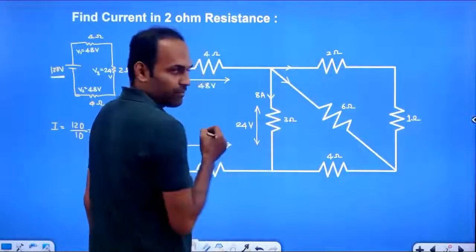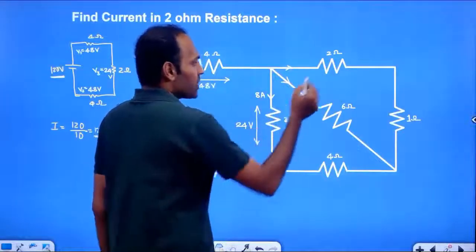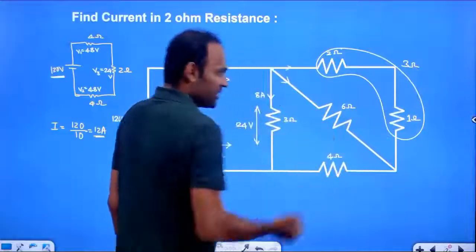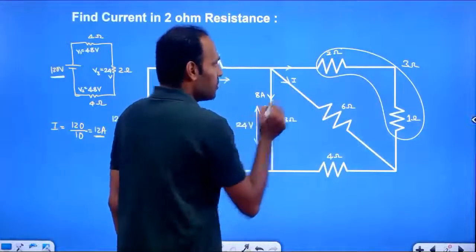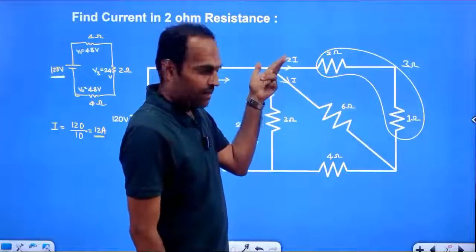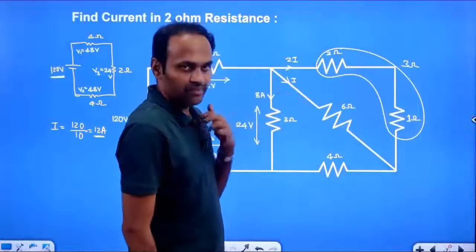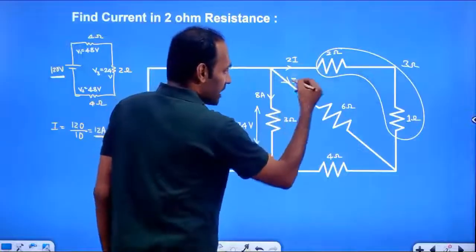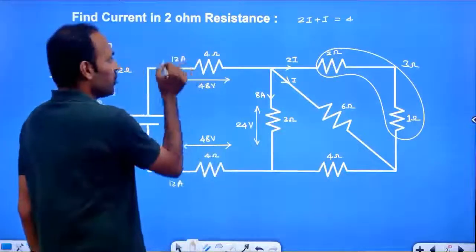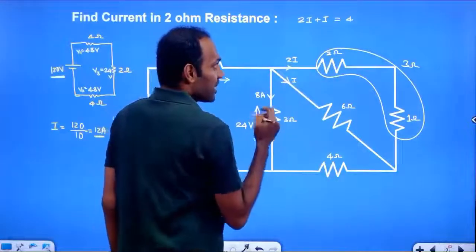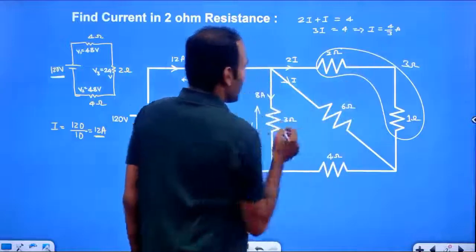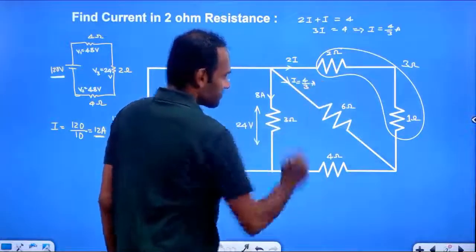The 4A has to divide in 2 parts between the 3 Ohm and 6 Ohm parallel branches. If the current in the 3 Ohm branch is 2I and in the 6 Ohm branch is I (since if resistance gets halved, current doubles), then 2I plus I equals 3I equals 4A. So I equals 4/3 A.